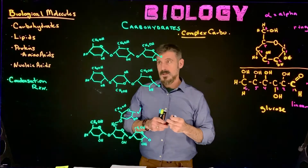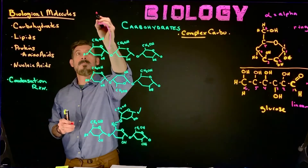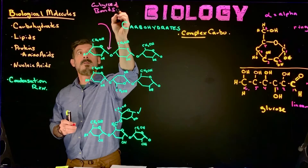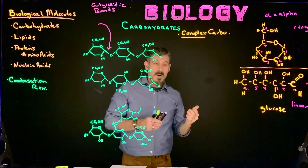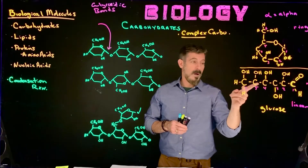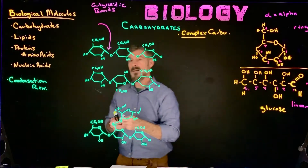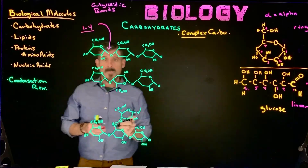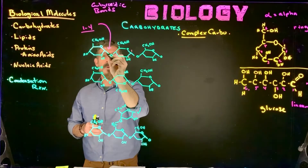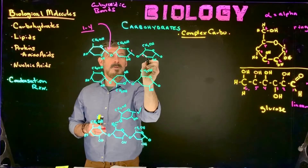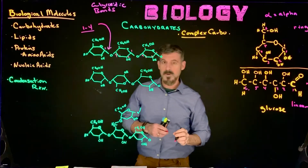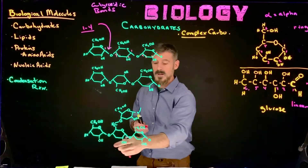They're going to have glycosidic linkages - these are the bonds between the two rings. When we talk about sugars, we refer to the glycosidic links as being between particular carbons based on their number. These particular links here we call 1-4 linkages, because they're going to be between the number one carbon and the number four carbon. So it's a bond between the one and the four carbon, and that's going to be the same for all of these chains.